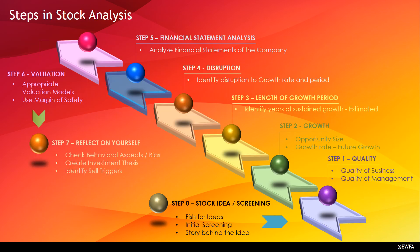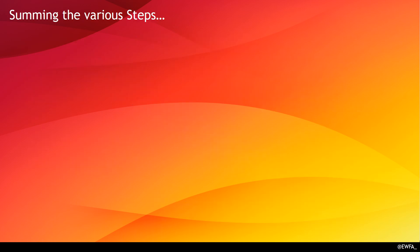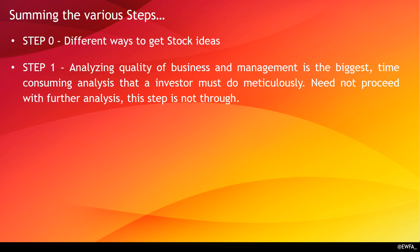In the previous video we discussed Step 4 — disruption — what could disrupt the estimated growth and longevity of growth. To quickly summarize: in Step 0 we saw how to get initial stock ideas. In Step 1, the identified stocks were analyzed for quality of management and quality of business. One without the other is useless — they are multiplicative, meaning 1×0 or 0×1 equals zero. Many companies fail at this stage.